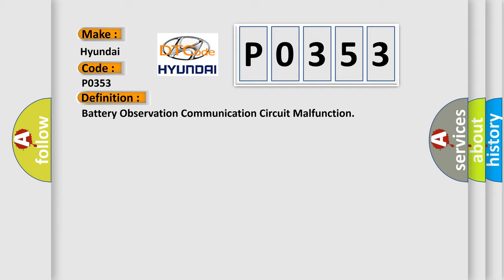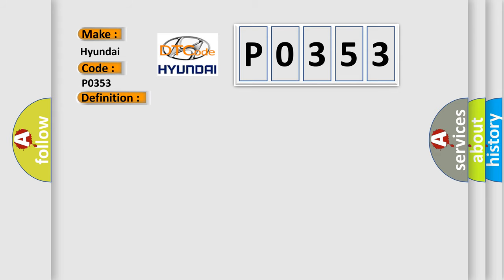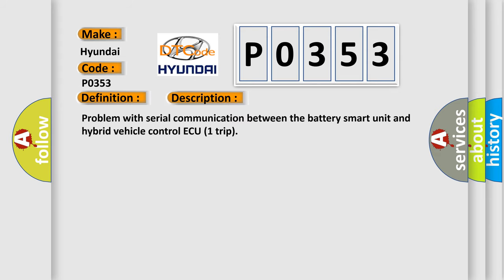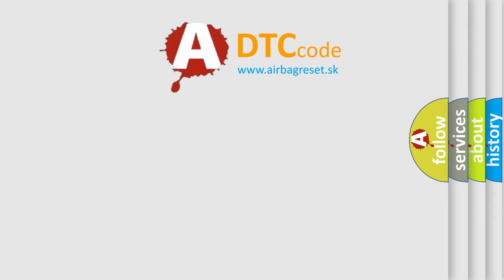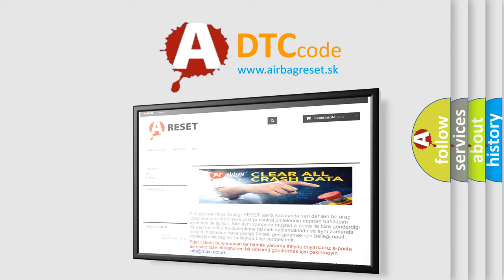Here is a short description of this DTC code: problem with serial communication between the battery smart unit and hybrid vehicle control module. This diagnostic error occurs most often in these cases: wire harness or connector issue between the hybrid vehicle control module and the battery smart unit. The airbagreset.sk website aims to provide information in 52 languages. Thank you for your attention and stay tuned for the next video.